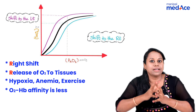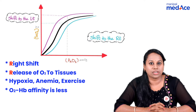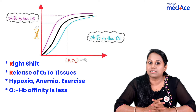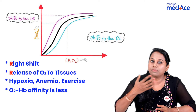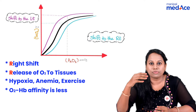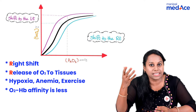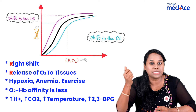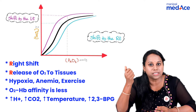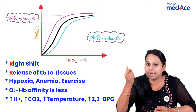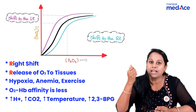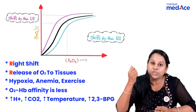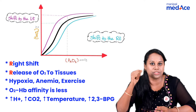What are the other factors which can cause right shift? Right means something good, something positive. So, we will place all increasing factors: increase in H+, increase in CO2, increase in temperature, and increase in 2,3-BPG.